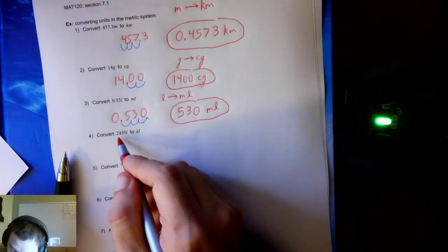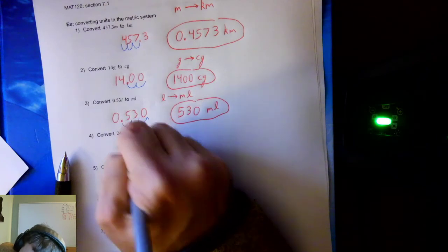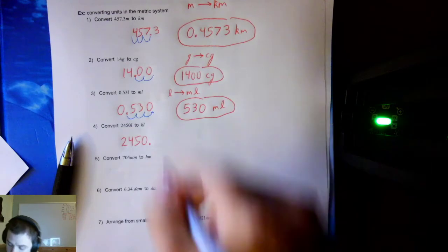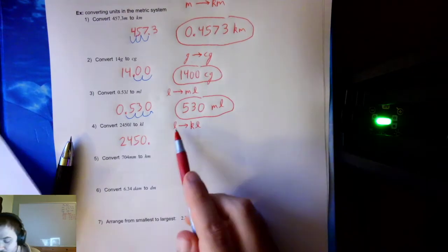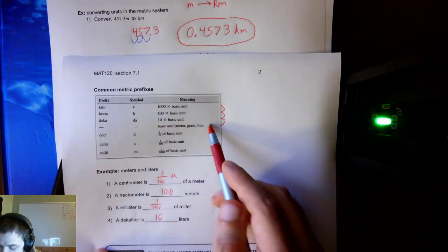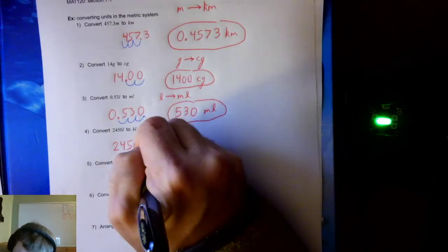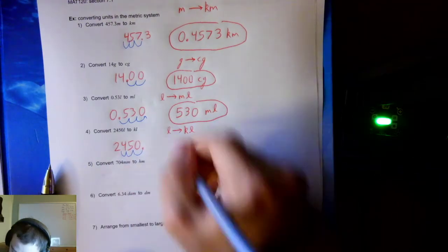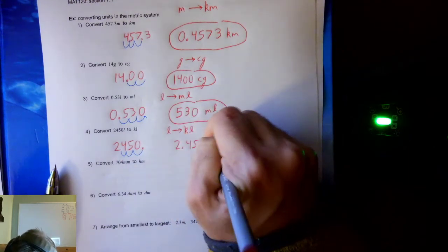Example 4: Convert 2,450 liters to kiloliters. I'm going from liters to kiloliters — smaller to larger — so I move the decimal left. It's 3 hops up from liters to kiloliters, so I take 3 hops left. After 3 hops left, I get 2.450 kiloliters.